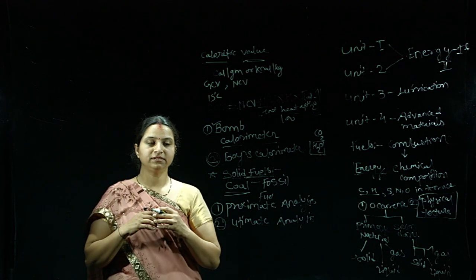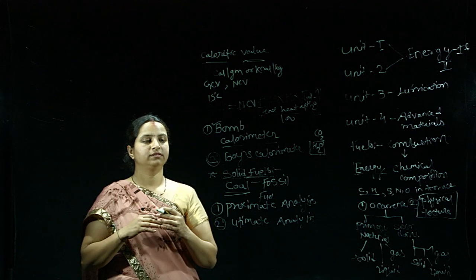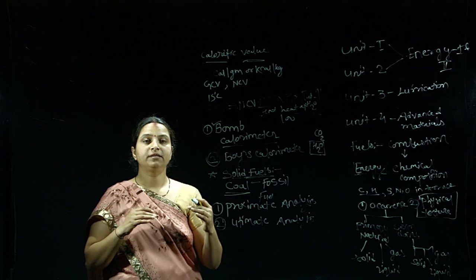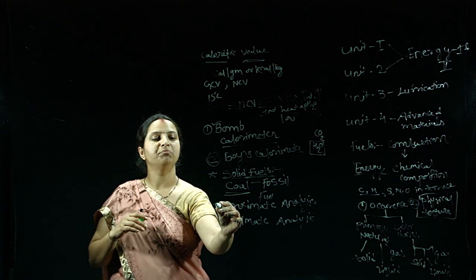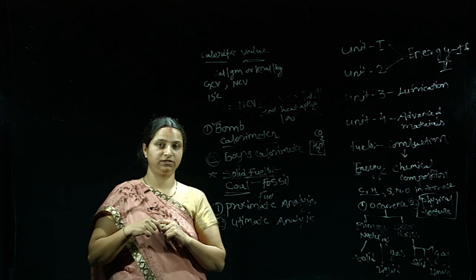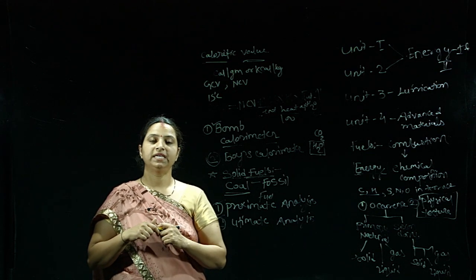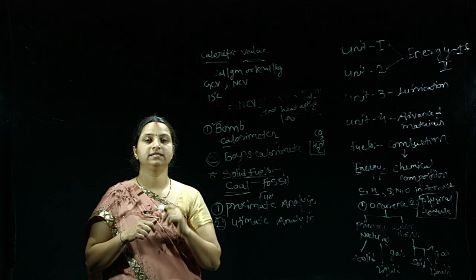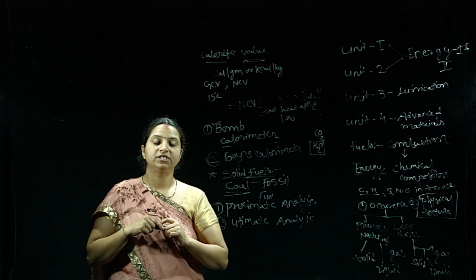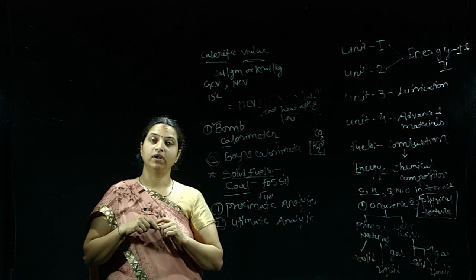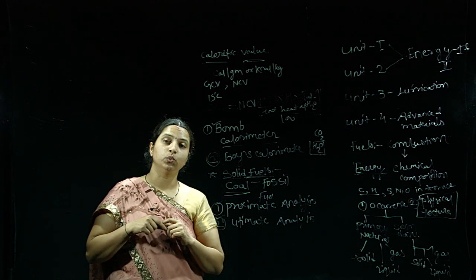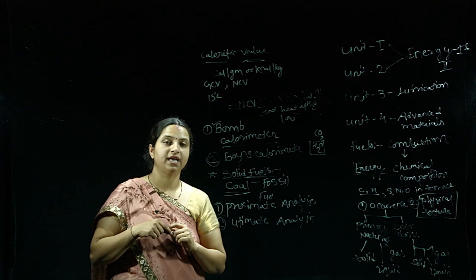There are other parameters of coal that we can determine using these two methods — proximate analysis and ultimate analysis. Proximate analysis is the analysis in which we determine the percentage of volatile matter, ash content, and moisture present in the coal.